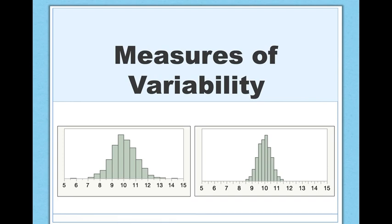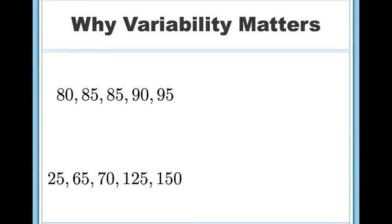But before we get to any of the nitty-gritty details, I want to motivate why we need measures of variability with two examples. So here's two different data sets, one on the top and one on the bottom. I'll just go ahead and tell you that the mean for both data sets is 87.